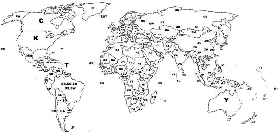For example, if one knows that the ICAO code for Heathrow is E-G-L-L, then one can deduce that the airport E-G-G-P is somewhere in the UK — it is Liverpool John Lennon Airport. On the other hand, knowing that the IATA code for Heathrow is L-H-R does not enable one to deduce the location of airport L-H-V with any greater certainty — it is William T. Piper Memorial Airport in Lock Haven, Pennsylvania. There are a few exceptions to the regional structure of the ICAO code made for political or administrative reasons.